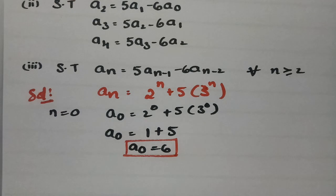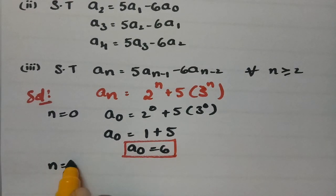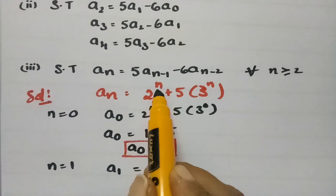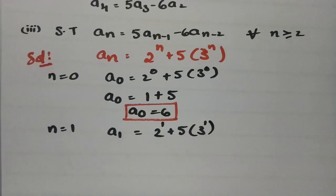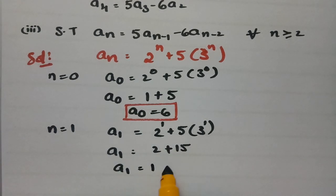For a_1, we keep n equal to 1. So a_1 equals 2^1 plus 5 times 3^1, which is 2 plus 15. So a_1 equals 17.